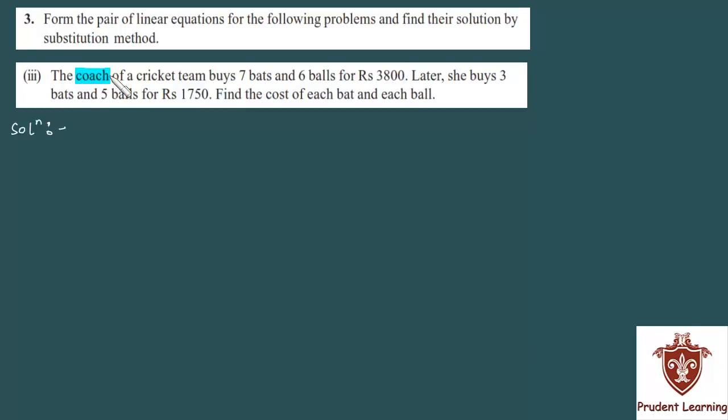The coach of a cricket team buys 7 bats and 6 balls for Rs. 3800. Later she buys 3 bats and 5 balls for Rs. 1750. With this information, we have to find the cost of each bat and each ball.